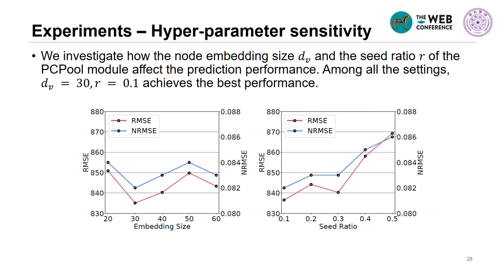We also conducted a hyperparameter sensitivity analysis, investigating how the node embedding size and the C ratio of the PCPool module affect prediction performance. We find that among all settings, Dv equals 30 and R equals 0.1 achieves the best performance.